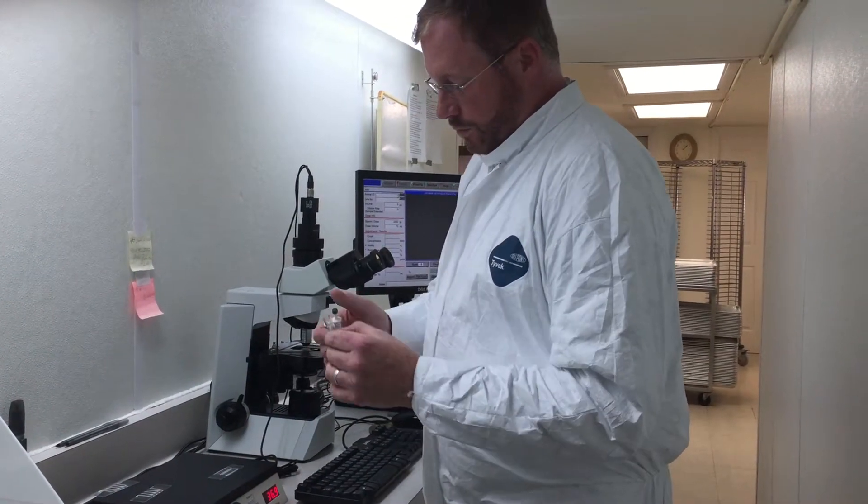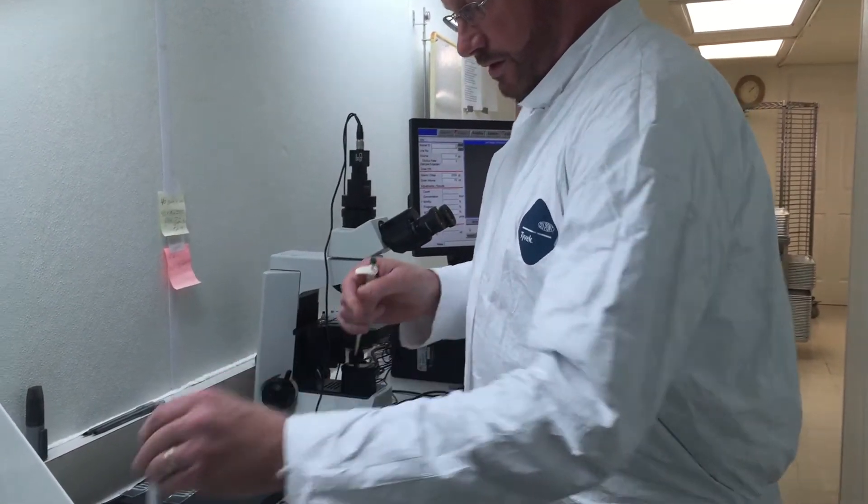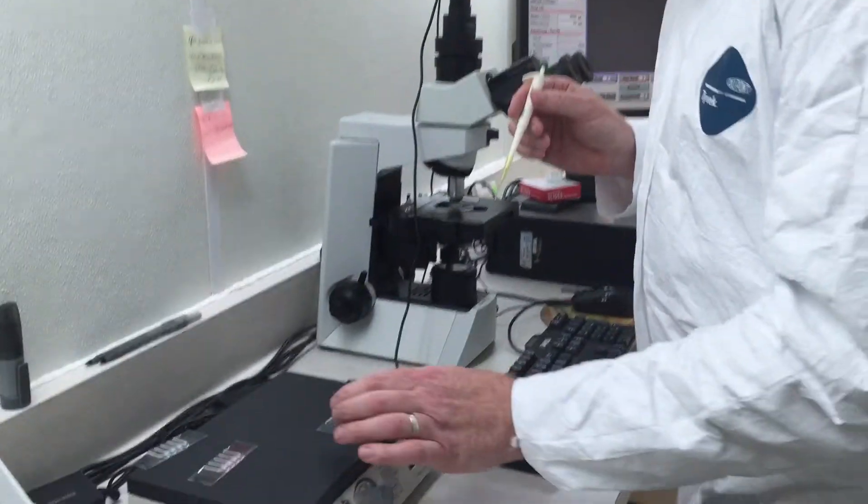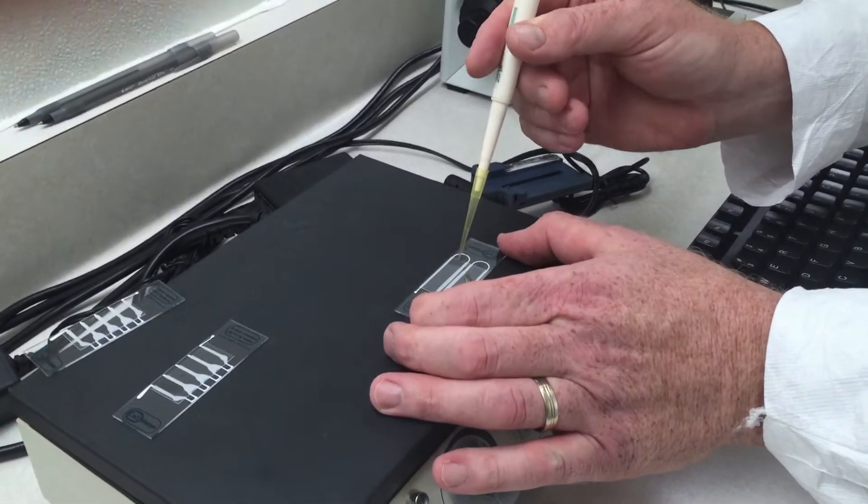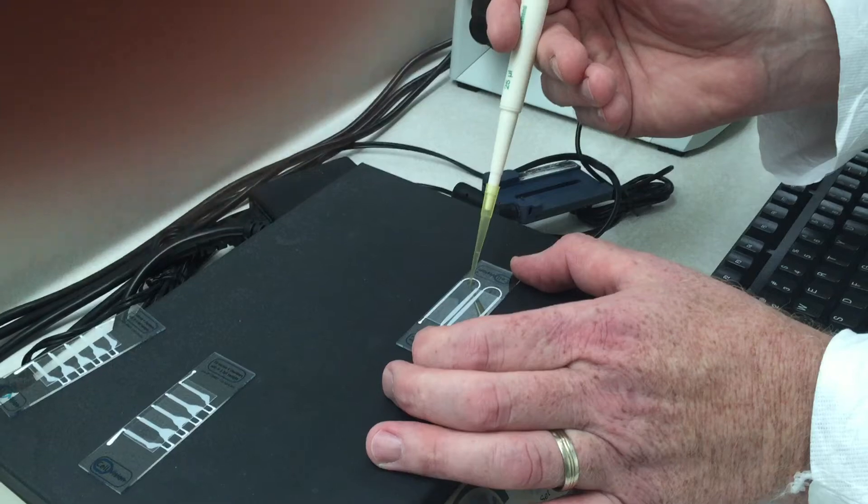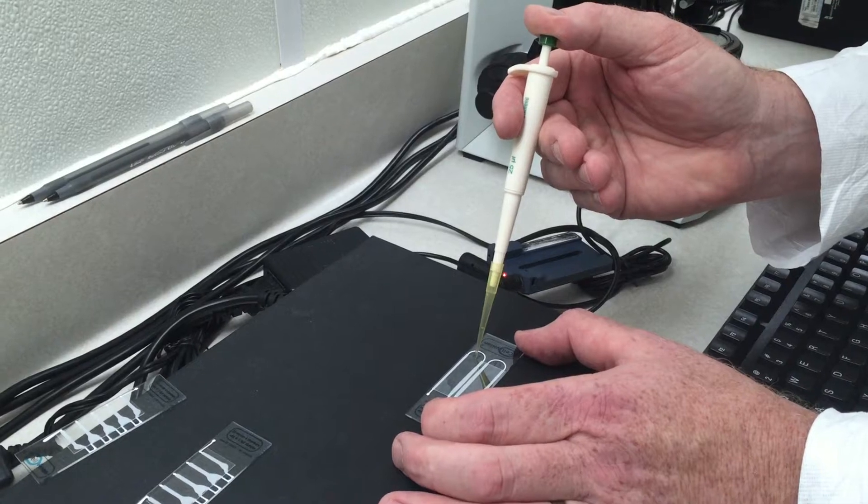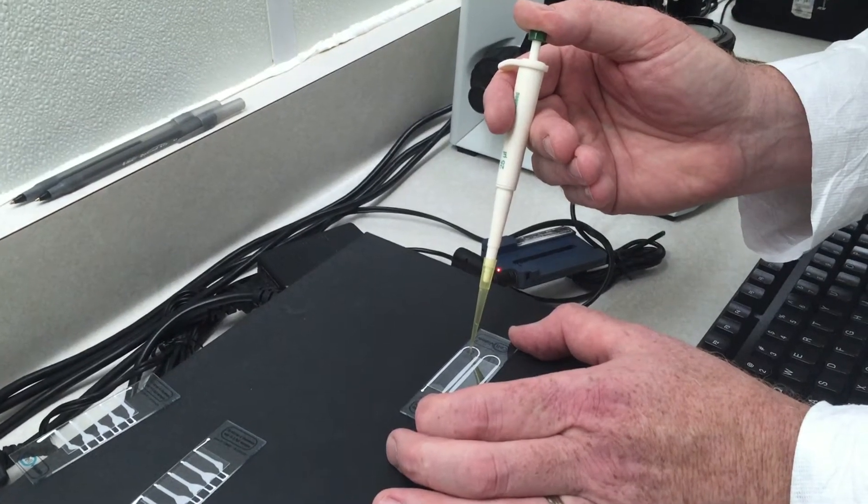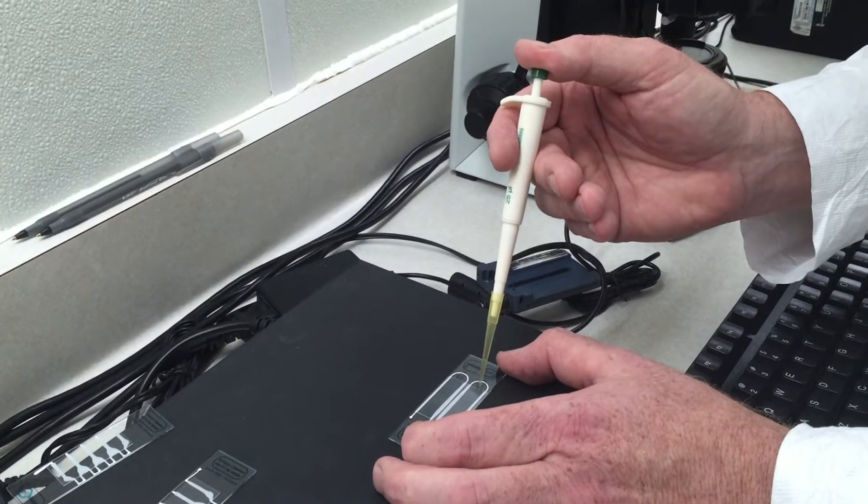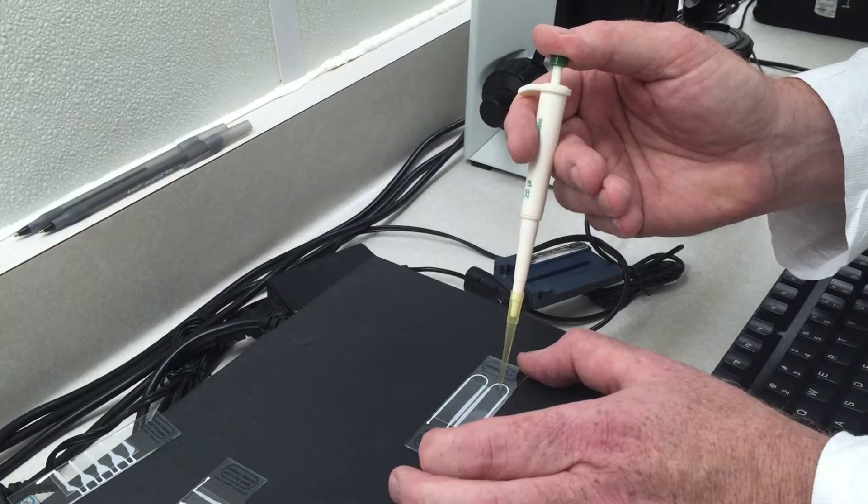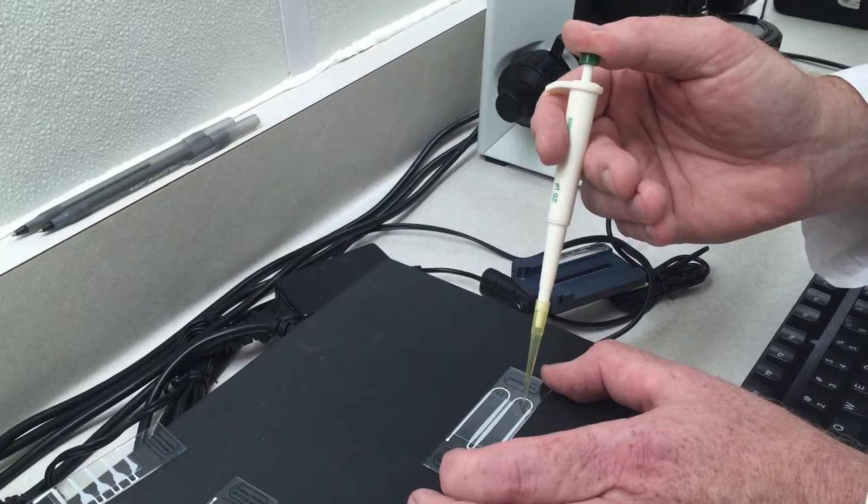So we're stirring our sample, removing the top, and pipetting one pipette full. Now we're going to load both chambers of the Cell Vision slide because we want to do at least two samples to get an accurate count. Here's how we load: we put a small amount right at the start and it fills by capillary action. Go until the chamber's full, and we'll load the second chamber as well.